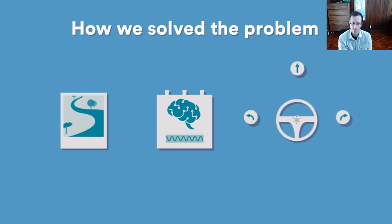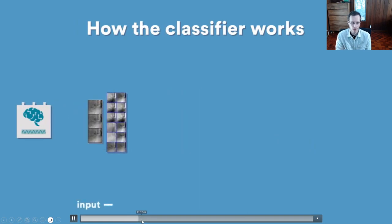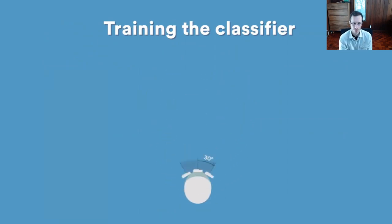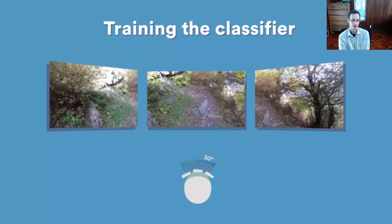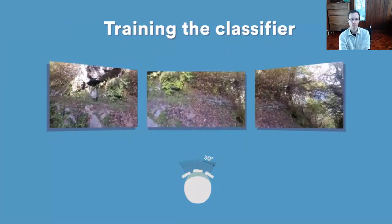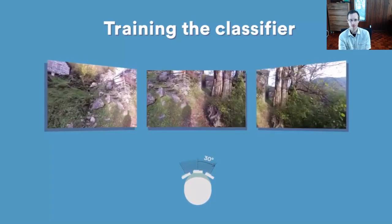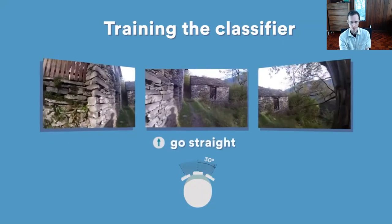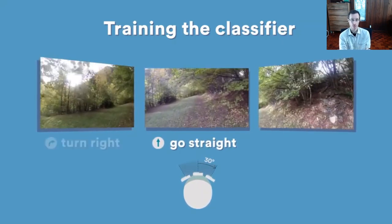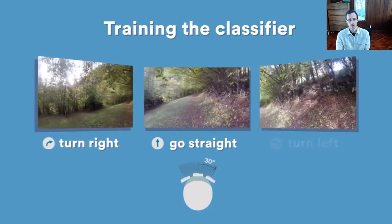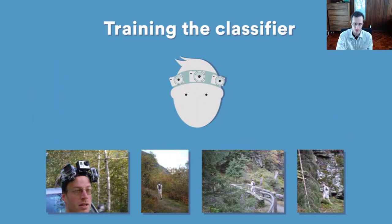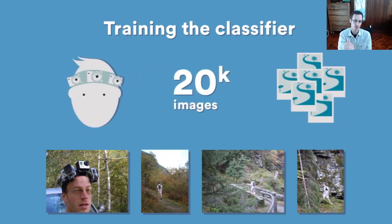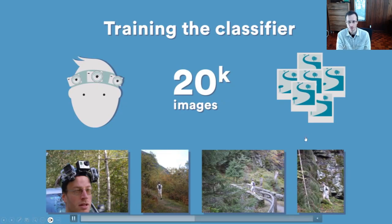Their approach was even simpler than the driving example. They simply assumed that the person would always go in the correct direction, and they labeled the left-facing camera with the action to go right, the right-facing camera with the action to go left, and the straight-facing camera with the action to go straight. That is the entirety of the method — no attempt to record the human's actions. And that actually worked pretty well. It's a nice illustration of how data augmentation can enable imitation learning to work well. It wouldn't surprise me if flying the quadcopter with only a forward-facing camera would have actually produced somewhat worse results.